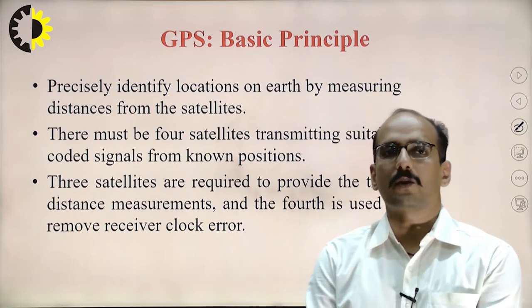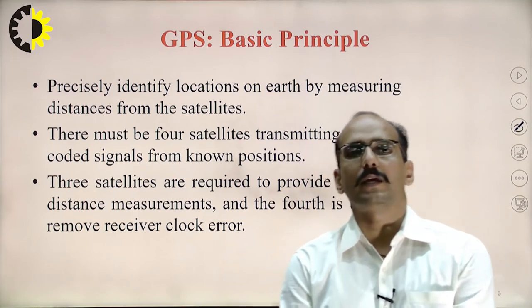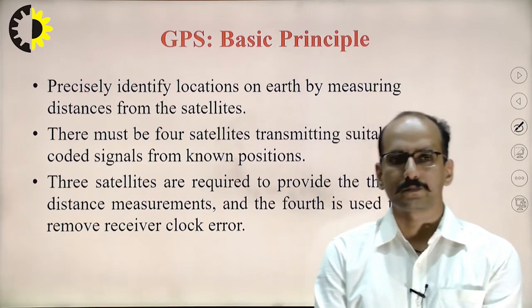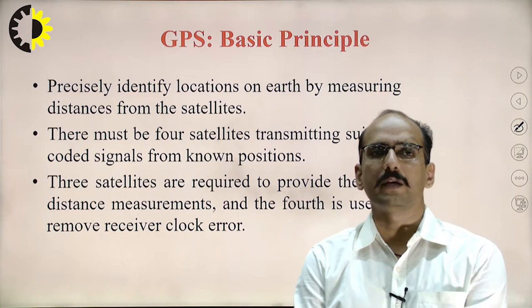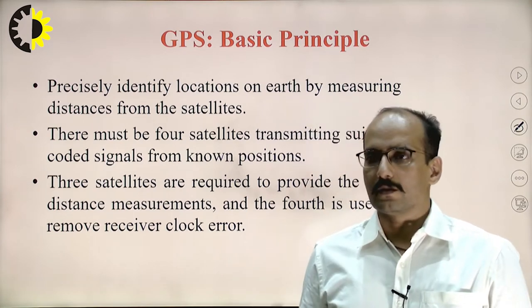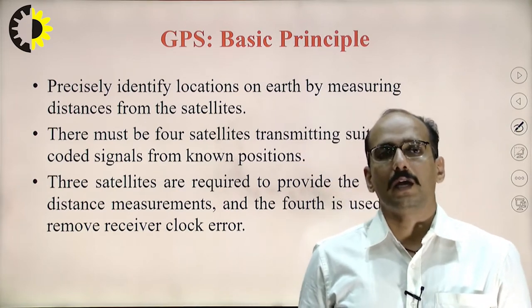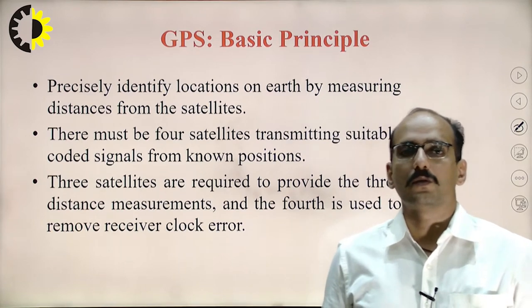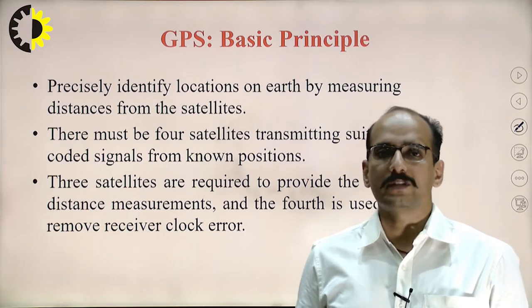When talking about GPS, the first question that comes to mind is how you locate the position of a system or vehicle on the earth. They precisely identify the location by measuring distances from various satellites. In the original GPS system, there are 24 satellites in MEO orbit continuously orbiting the earth. Whenever you want to identify any position or location, a minimum of 4 satellites are used.